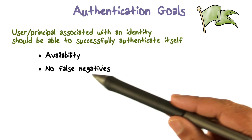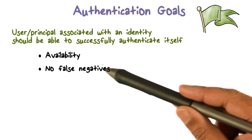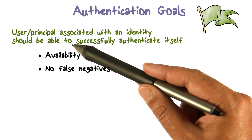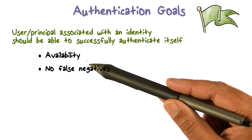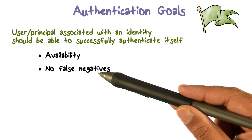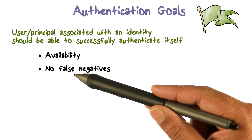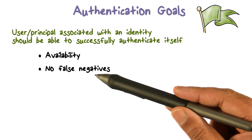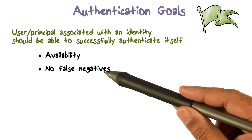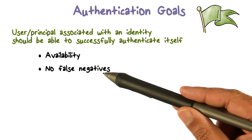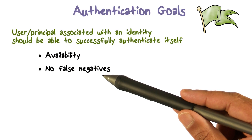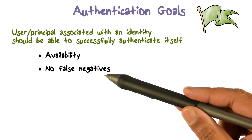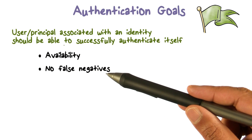If it's the right user providing the right evidence and the system still has a negative outcome, that is incorrect — that result is false. The user was the right one with the right evidence, but perhaps the method has a problem and is not able to allow the user in. So if the outcome is negative and it's done incorrectly, that is called a false negative — incorrectly denying access or declining an authentication request. We don't want that.